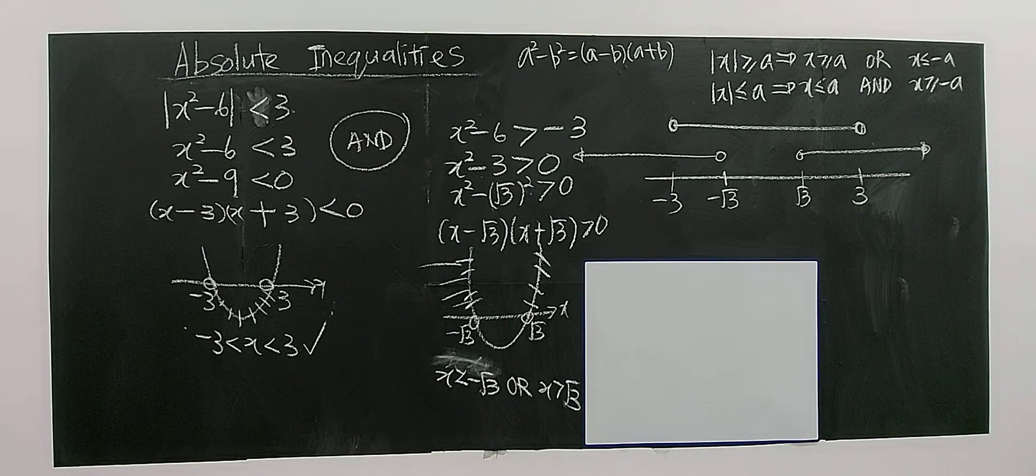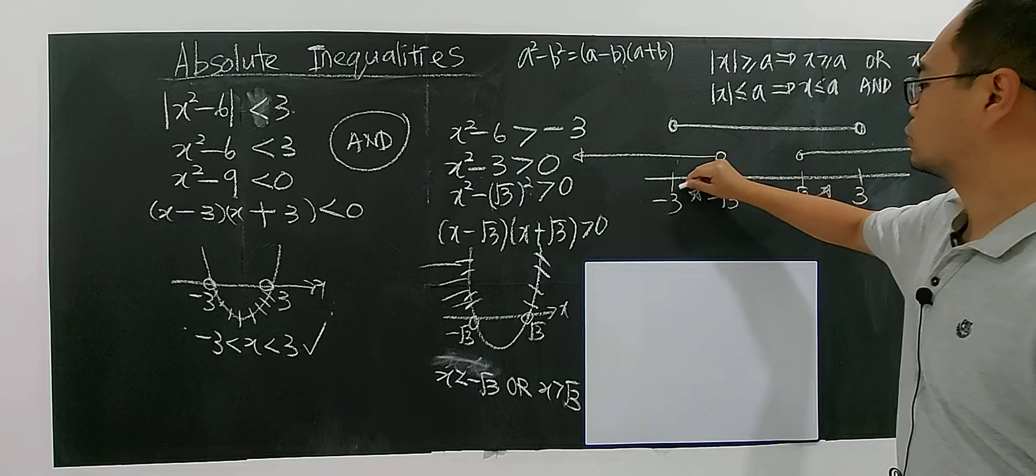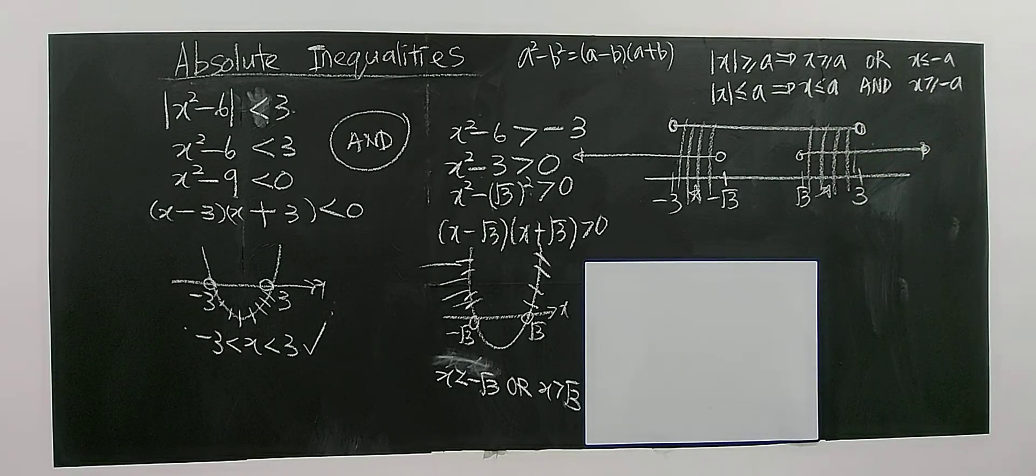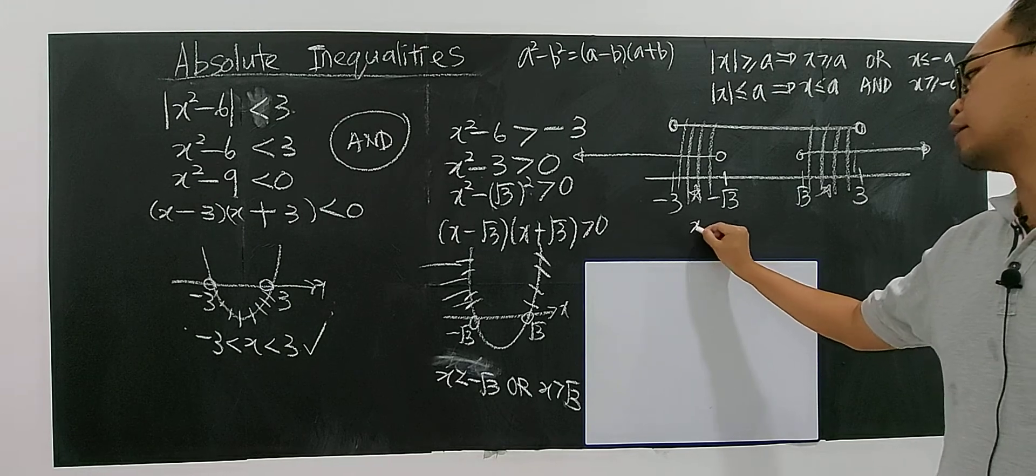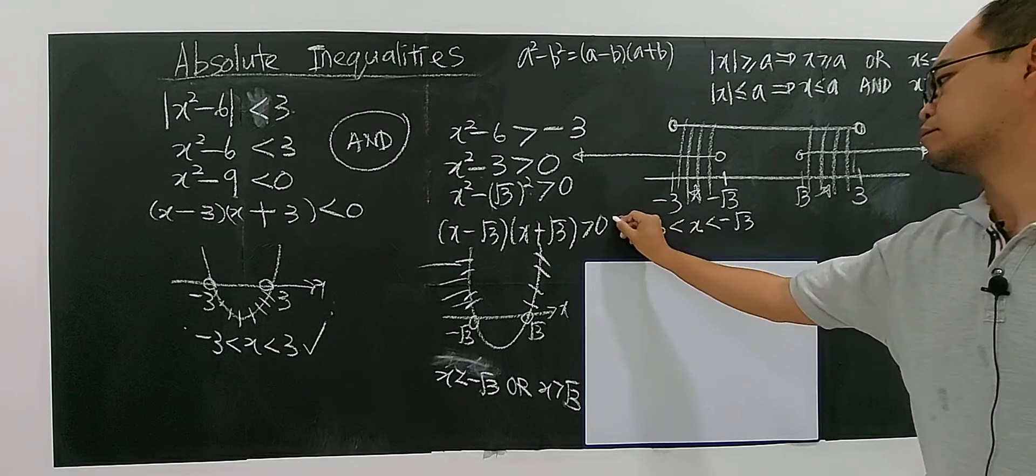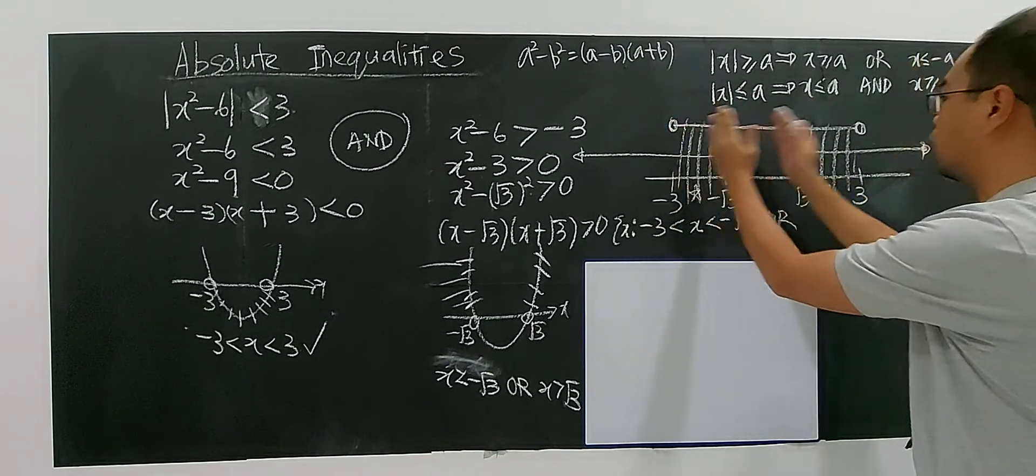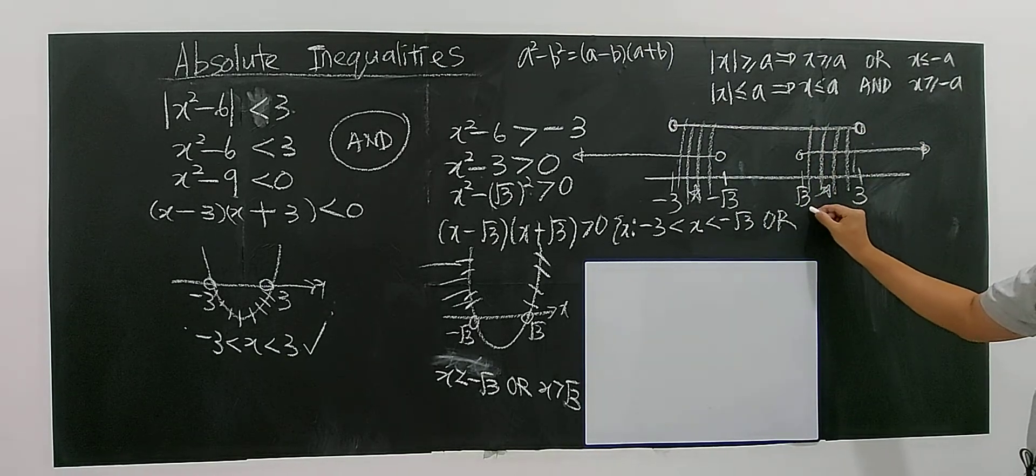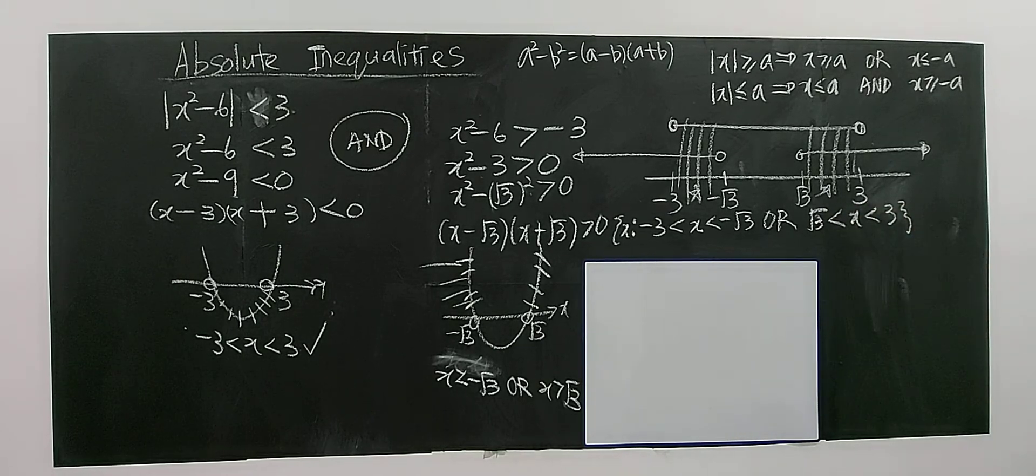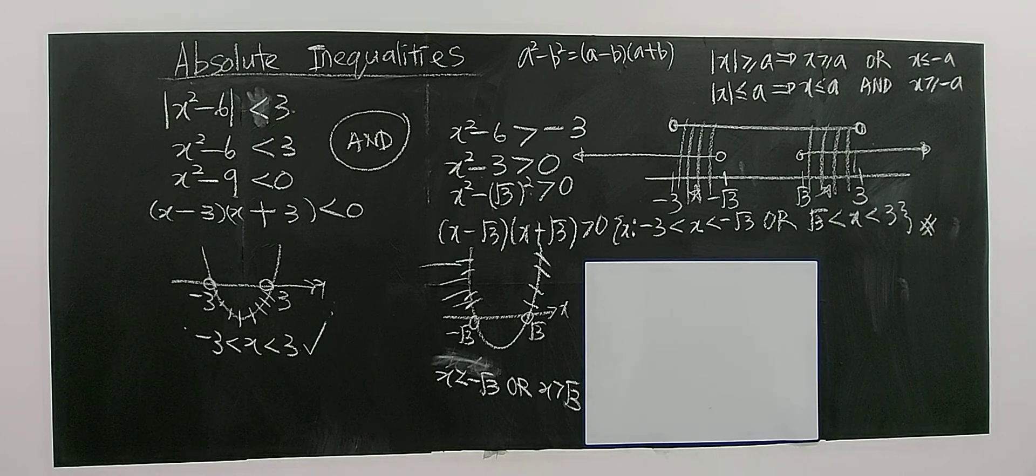Then now you can conclude your solution. Your solution will be x in between negative square root of three and negative three, or because this region or this region there are two regions, so square root of three is between, x is between square root of three and three. So this will be the solution for this problem. Alright, see you on the next example.